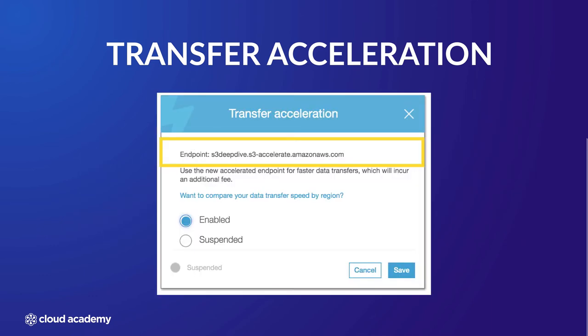To enable Transfer Acceleration is very simple. Select your bucket within the S3 console, select Properties, and then select the Transfer Acceleration tile. You can either enable it or suspend it as required. You will also notice that you will be given an endpoint — in this case, the endpoint for the bucket is as shown.